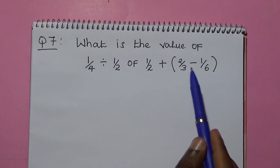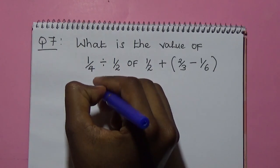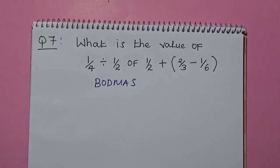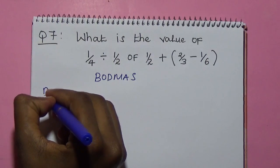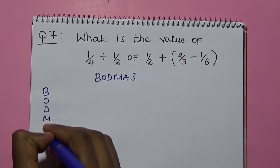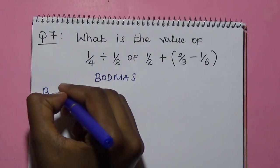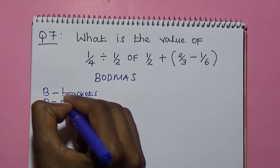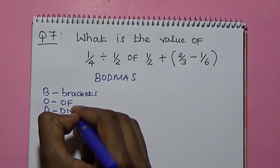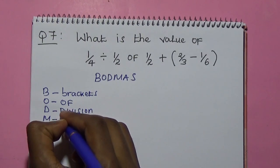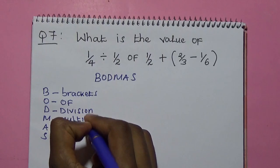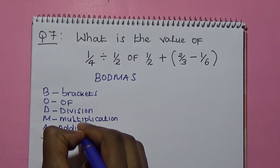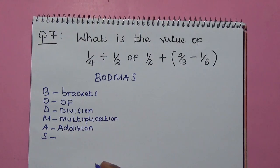In this question, we are going to use BODMAS. We write down the meaning of BODMAS: B means brackets, O means of, D means division, M means multiplication, A means addition, and S means subtraction.